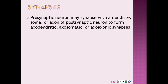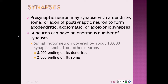A presynaptic neuron may form an axodendritic, an axosomatic, or an axoaxonic synapse. The axodendritic is a synapse between the dendrites, the axosomatic is a synapse between the soma, and the axoaxonic is a synapse between the axon, hence the names. A neuron can have an enormous number of synapses — a spinal motor neuron covered by about 10,000 synaptic neurons from other neurons, with 8,000 ending on its dendrites and 2,000 ending on its soma.